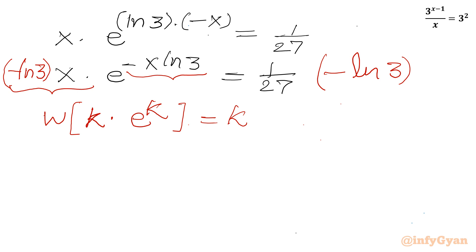So left hand side if I will write, then it is minus x ln 3, which is k, times e raised to the power of minus x ln 3. And right hand side it will be minus ln 3 divided by 27.